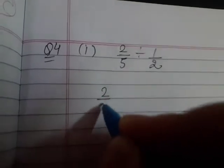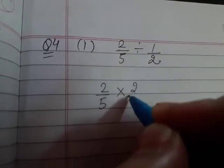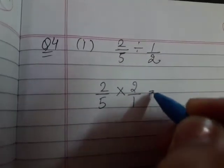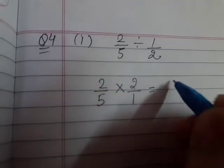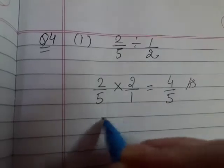Two by five divided - instead of divide, we multiply by the reciprocal. One by two becomes two by one. Clear? Now we multiply: two twos are four, five ones are five. This is a proper fraction. This is our answer.